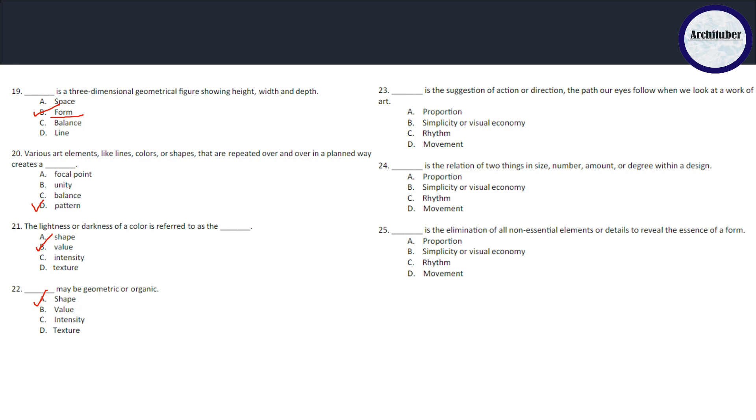The suggestion of action or direction, the path our eyes follow when we look at a work of art - is it proportion, visual economy, simplicity, rhythm, or movement? The answer for 23 is movement. Question 24: the relation of two things in size, number, amount or degree within your design - it is proportion.